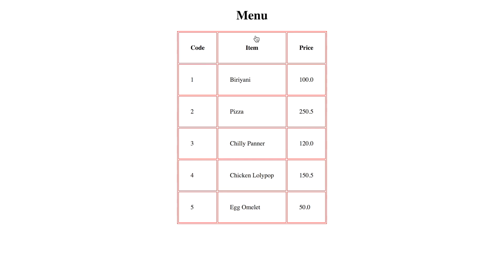If I click this link it is going to redirect me to a different page. Right now I'm on the menu page and it's displaying all the food items available in this app — like biryani, pizza, chili paneer, chicken lollipop — and I'm getting the price right next to each item, like biryani 100 rupees, pizza 250 rupees, and so on. This is the view we are getting and this is my front end.